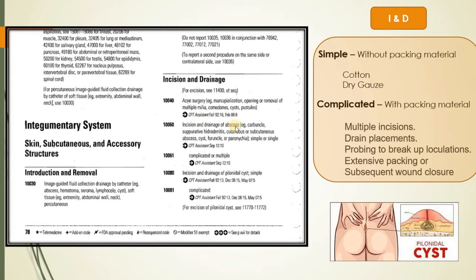So here you can see 10060. This code description is incision and drainage of abscess. This CPT code 10060 for simple and single. And the next code you can see 10061 is complicated or multiple. So incision and drainage part anatomical sides are same. But here you can see 10060 for simple and 10061 is for complicated and multiple.